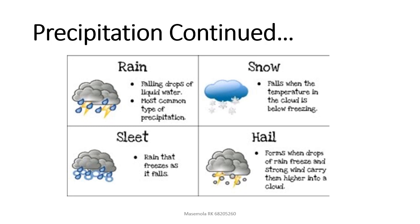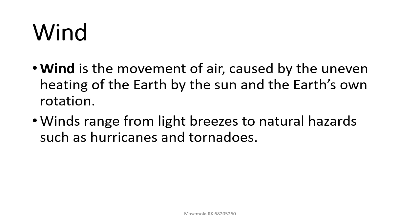Precipitation continued — rain, snow, sleet, hail. Moving on to wind — wind is the movement of air caused by the uneven heating of the Earth by the sun and the Earth's own rotation. That's what causes wind. Winds range from light breezes to natural hazards such as hurricanes and tornadoes.